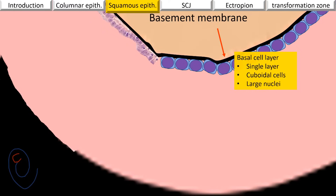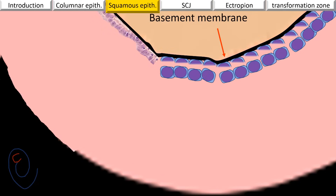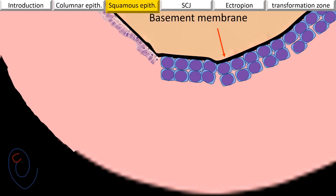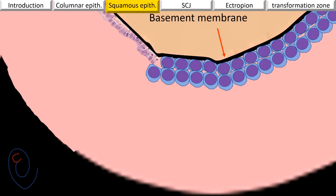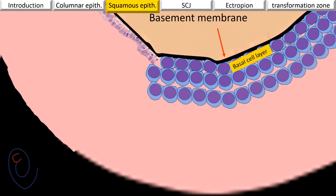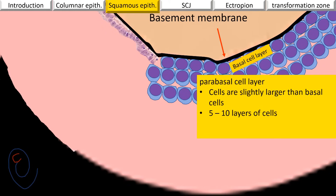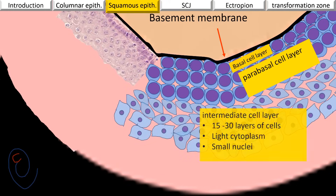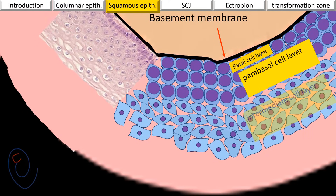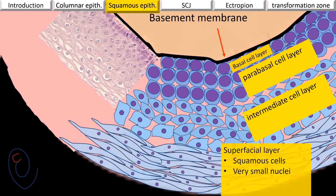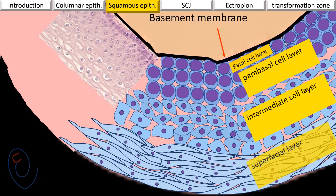The function of basal cells is similar to the reserve cells of the endocervix — they divide and multiply. When basal cells divide, the older ones move towards the surface, becoming larger and forming parabasal cells. There are about five to ten layers of parabasal cells forming the parabasal cell layer. With increasing maturation, intermediate cells are formed, occupying about 15 to 30 layers in the intermediate cell layer, which contains light cytoplasm and small nuclei. With increasing maturity, the superficial layer forms, containing flat squamous cells with abundant cytoplasm and very small nuclei.